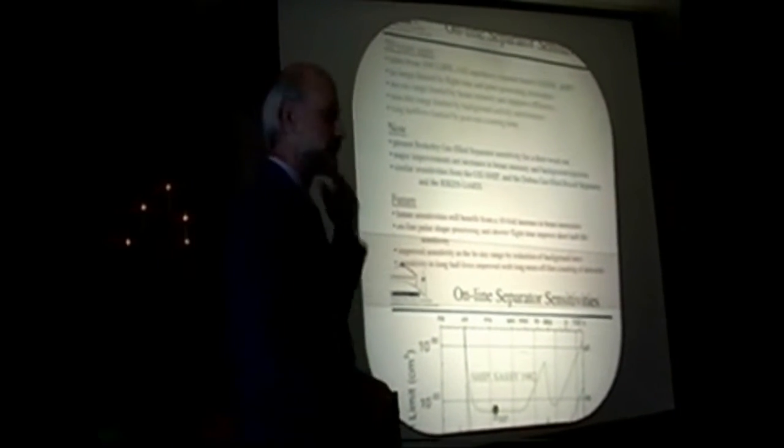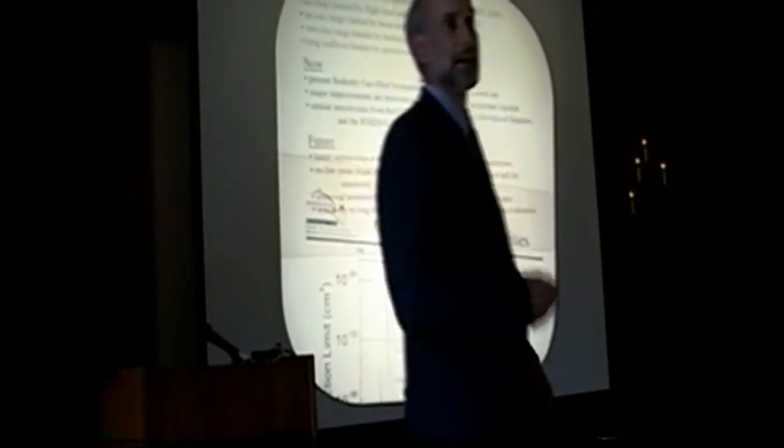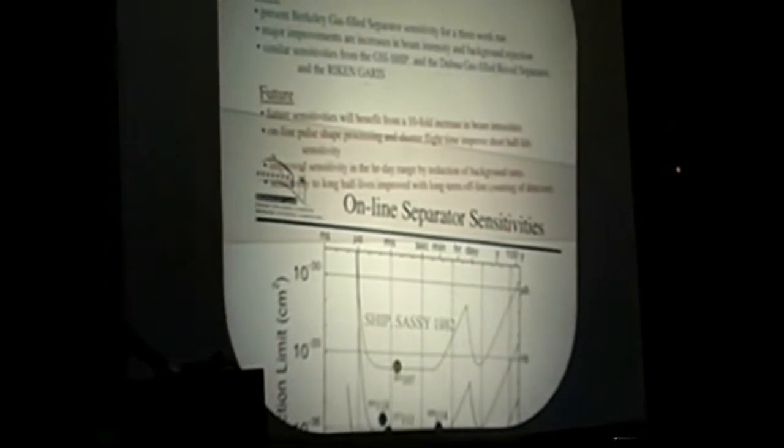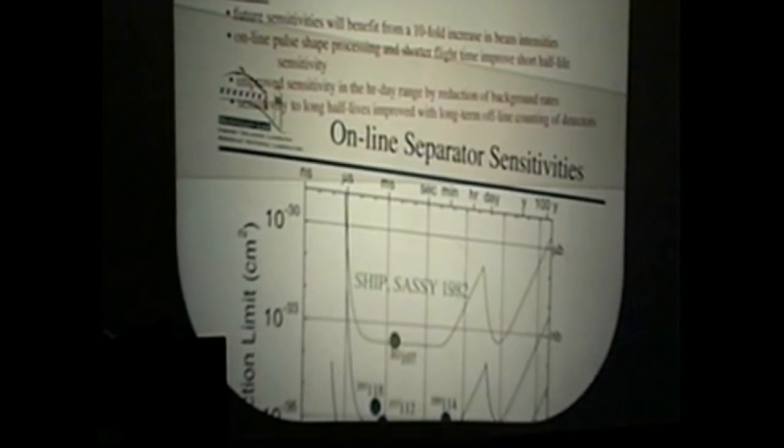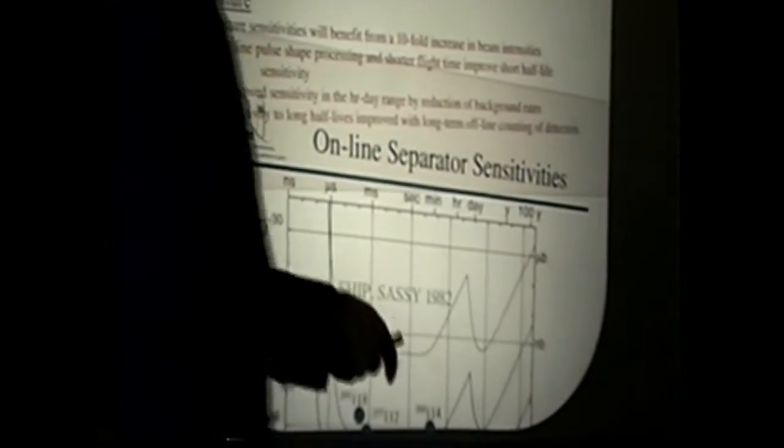If the half-life between the implantation and the decay is long, then background events come and compete and make it difficult to detect. When you get to very long half-lives longer than the length of the experiment, you have the possibility to count the detectors for long-lived decays after the experiment is over. Background rates are again very low, so the sensitivity increases again until you can only count the detector for a limited amount of time before you have to use it for another experiment.